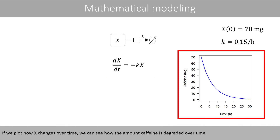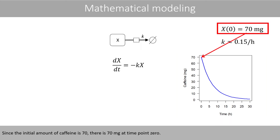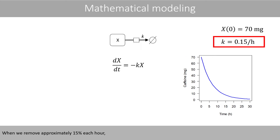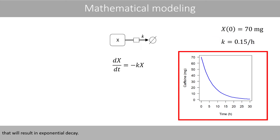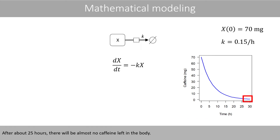If we plot how x changes over time, we can see how the amount of caffeine is degraded over time. Since the initial amount of caffeine is 70, there is 70 mg at time point zero. When we remove approximately 15% each hour, that will result in exponential decay. After about 25 hours, there will be almost no caffeine left in the body.